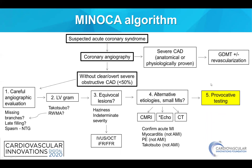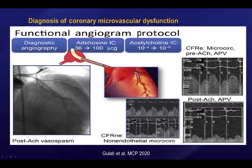One additional tool available in the cardiac catheterization laboratory: after all other steps have been performed — coronary angiography, left ventriculography, intracoronary imaging, and advanced imaging — there is a subset of patients at risk for microvascular dysfunction. It is in those patients that it is advocated to consider a functional angiogram protocol to determine the presence of endothelial dysfunction with provocative testing, and then tailor treatment accordingly.